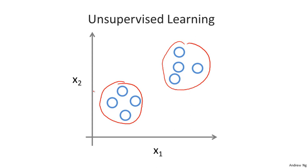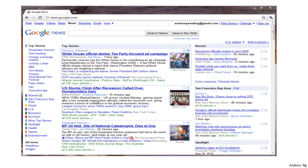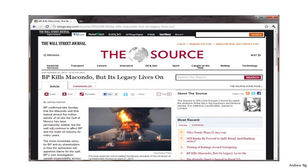One example where clustering is used is in Google News. And if you've not seen this before, you can actually go to this URL news.google.com to take a look. What Google News does is every day it goes and looks at tens of thousands or hundreds of thousands of news stories on the web and it groups them into cohesive news stories. For example, let's look here. The URLs here link to different news stories about the BP oil well story.